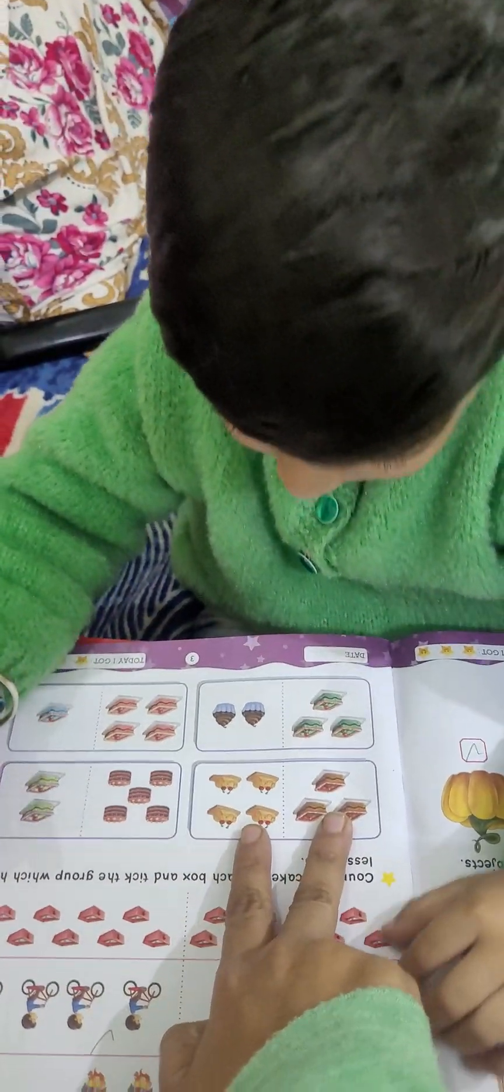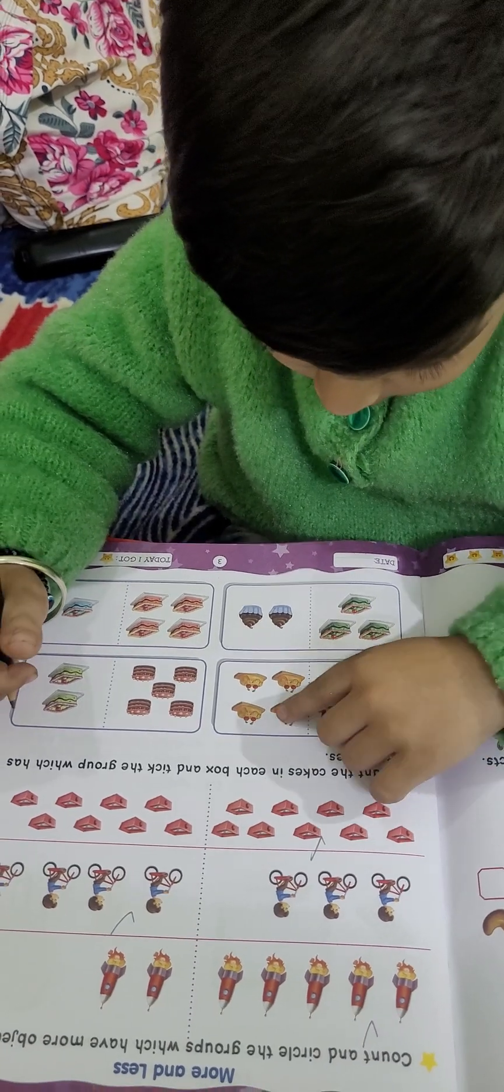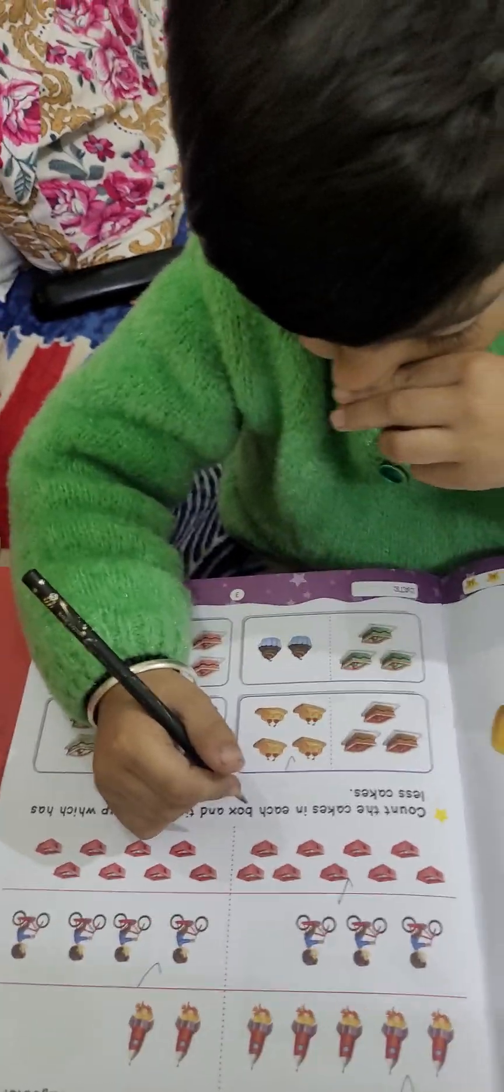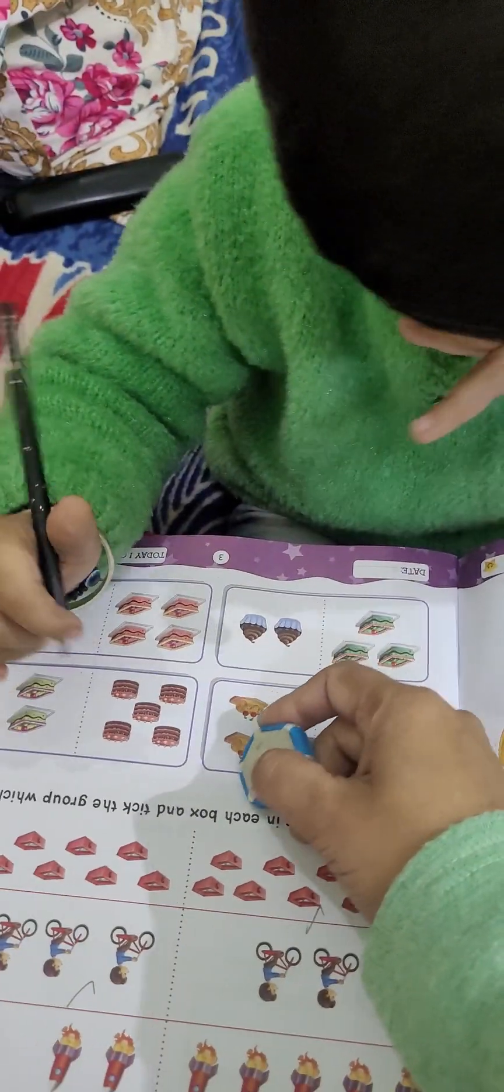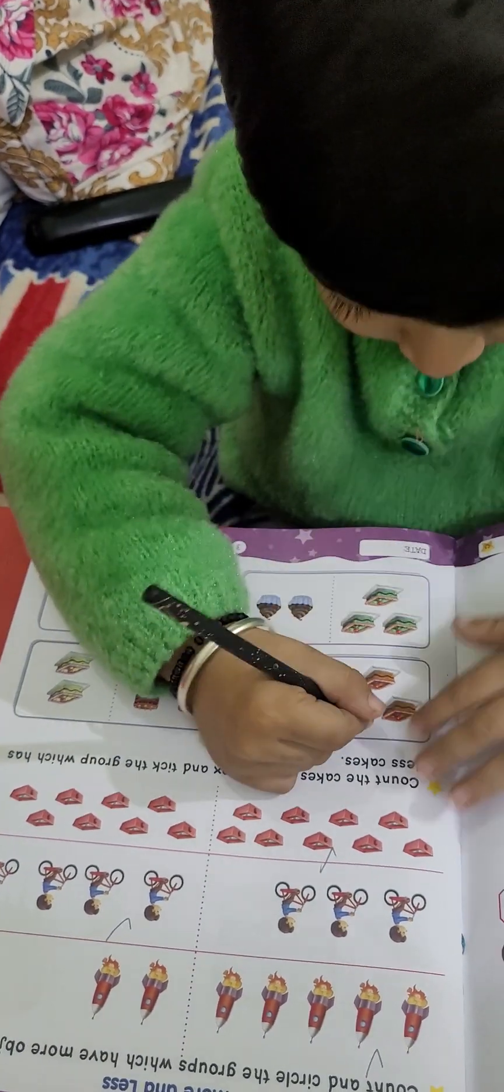Now, check in this. Which one is less? Less means? 1, 2, 3. 3. 1, 2, 3, 4. Which one is less? Less. Less means? Come. Which one is less? This one or this one? This one. Okay. Tick.